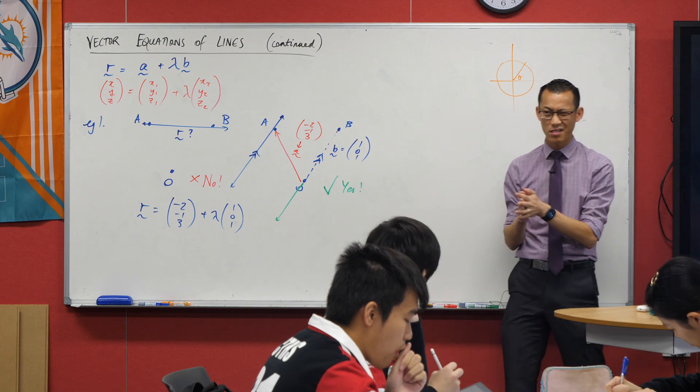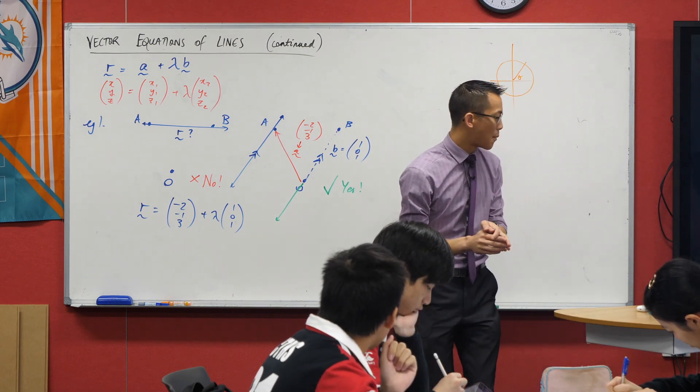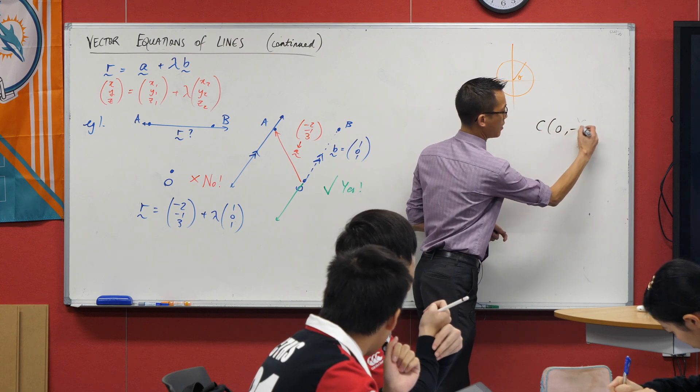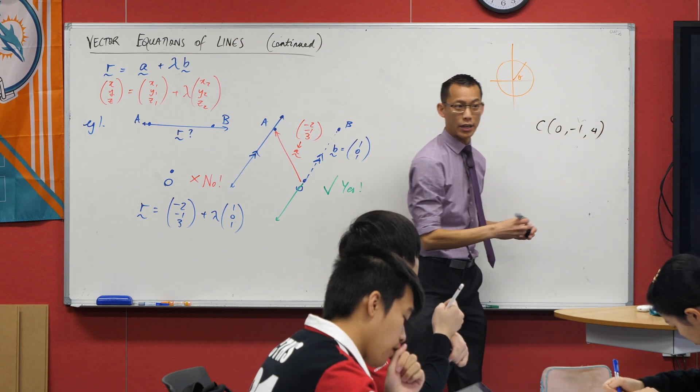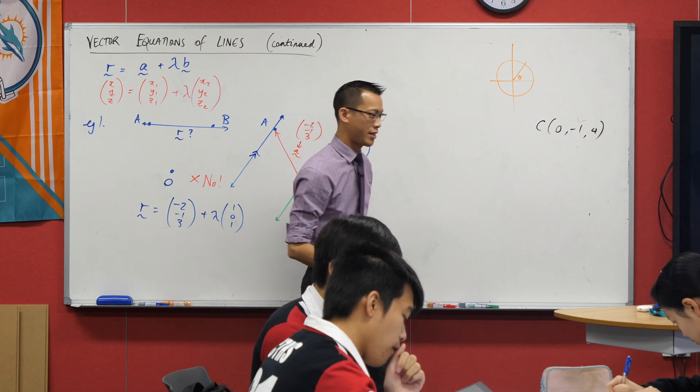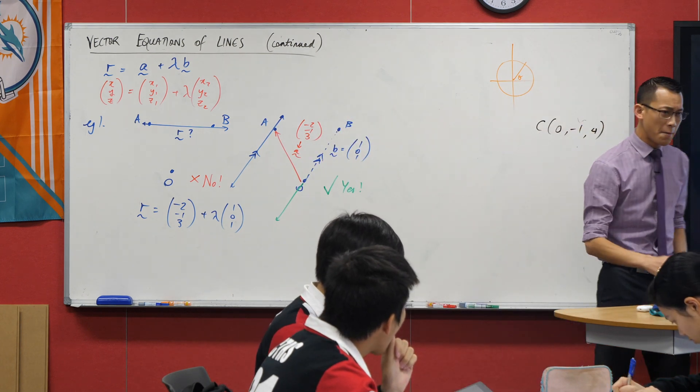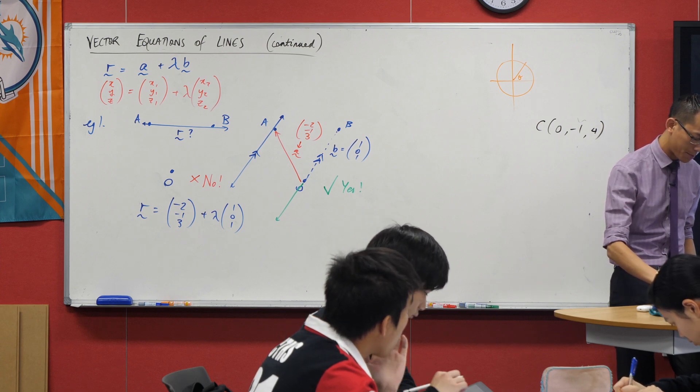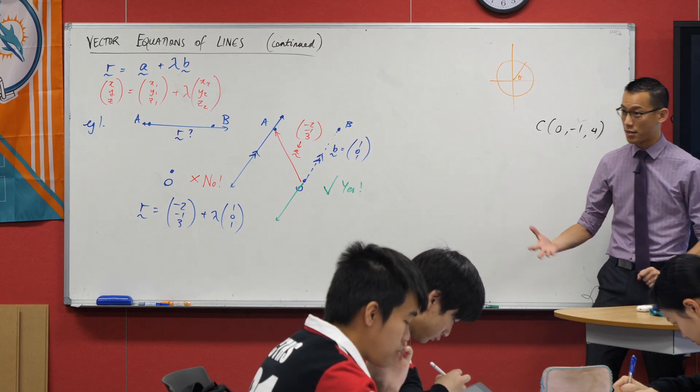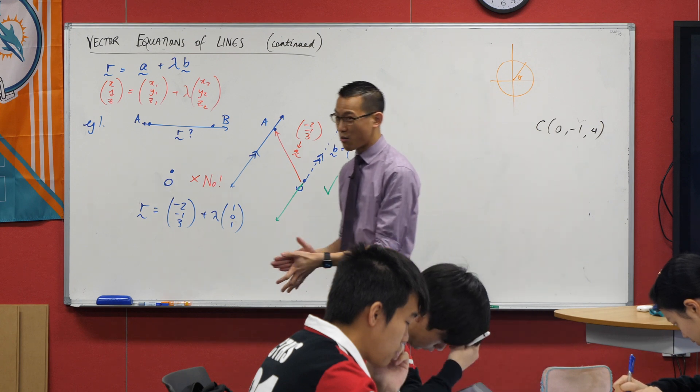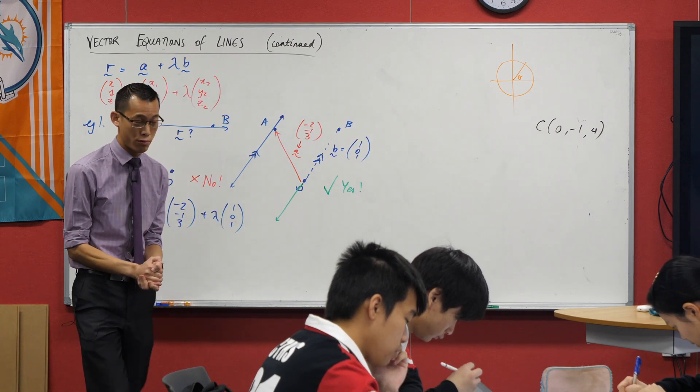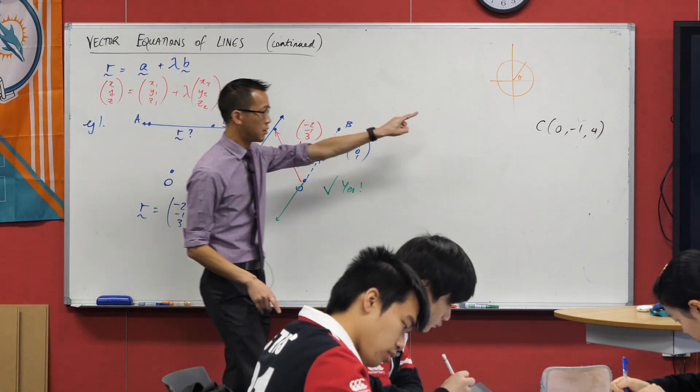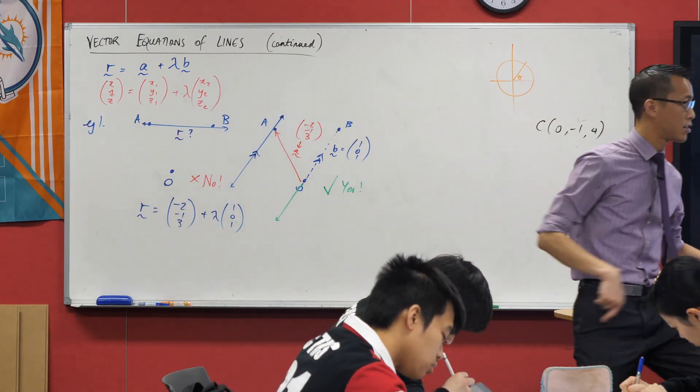We now have a vector equation for the line. What we want to do is determine, is this point C on that line or not? My clue for you is to think about what lambda would get you to such a point on the line. I'm going to give you a couple of minutes to have a bit of a play. The working is what I'm after. Even if you can say yes it's on there or no it's not, I really want to know how did you prove that?